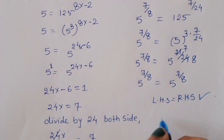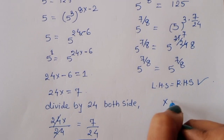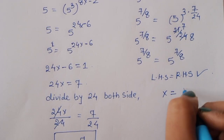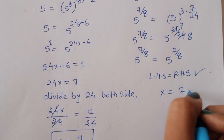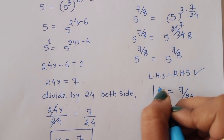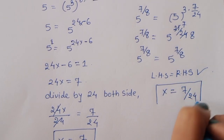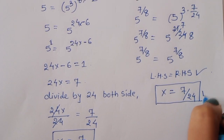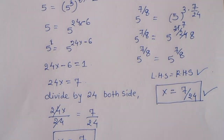Therefore we can say the value of x is equal to 7 upon 24. This is the correct solution. Thank you.